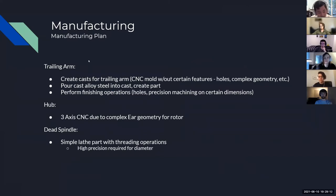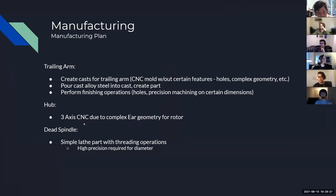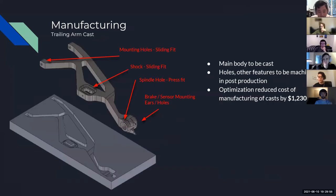For our manufacturing plans, the trailing arm will be created using a CNC mold without certain features like holes and complex geometry such as caliper mounting ears, then we'll pour cast alloy steel into the mold, and perform finishing operations including holes and precision machining on press-fit areas. The hub is a three-axis CNC part due to the complex ear geometry for the rotor. The dead spindle is a simple lathe part with threading operations, but requires high precision on press-fit dimensions over a long length.